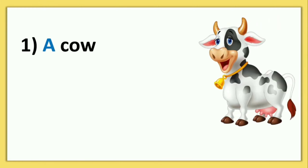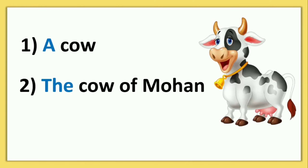Picture में देखें — हमने A cow क्यों use किया: यह singular noun है और C से start हो रहा है, मतलब consonant से। अब उसी के बारे में बता रहे हैं — the cow of Mohan — यह cow Mohan की है, तो यहाँ पे हम THE use करेंगे।